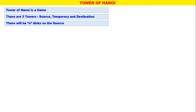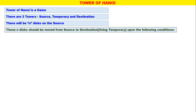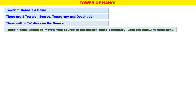There will be n disks on the Source Tower. So initially n number of disks will be there on the Source Tower. These n number of disks should be moved from the Source Tower to the Destination Tower, and in between you can use the Temporary Tower as well. There are some conditions — three conditions are there.